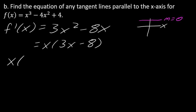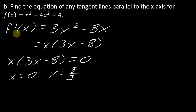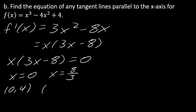Setting x times (3x minus 8) equal to zero gives two solutions: x equals 0 and x equals 8/3. Those are the two points where the tangent line is parallel to the x-axis. Now I need the y-coordinates. Plugging x=0 into the original function gives the point (0, 4). Plugging x=8/3 gives approximately (2.67, -5.48), so we'll use those decimal approximations.